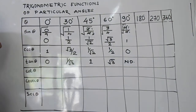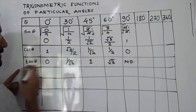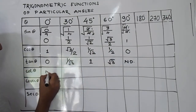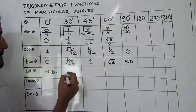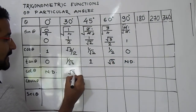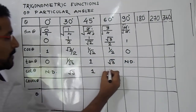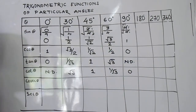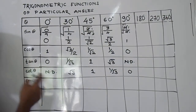Now for cot θ, just write the tan values in reverse order. So it will be: not defined, √3, 1, 1/√3, and 0. That gives the cot θ values.